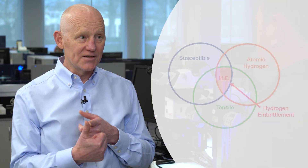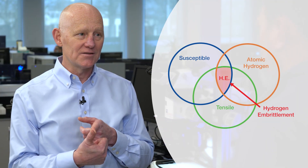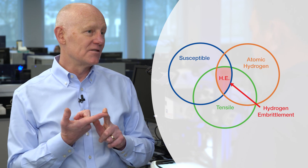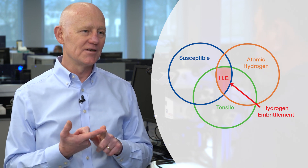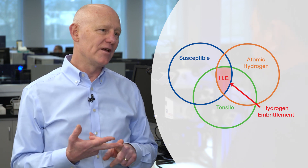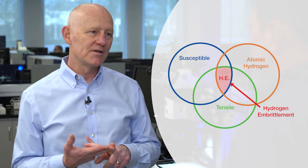Hydrogen embrittlement occurs when three things happen together. The first thing is a tensile stress. The second thing is you need availability of atomic hydrogen, and then you need a susceptible material.